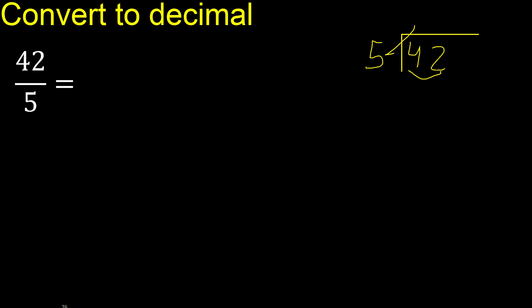Multiply by which number is nearest to 42 but not greater. 5 multiply by 9 is 45 — 45 is greater. Multiply by 8 is 40, it is not greater. 42 minus 40 is 2.